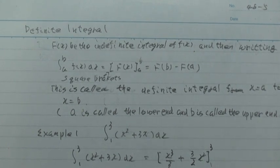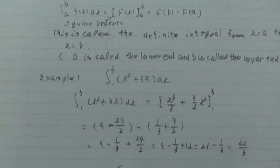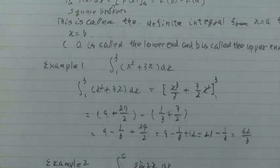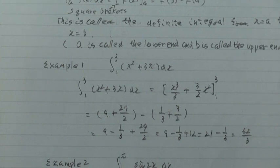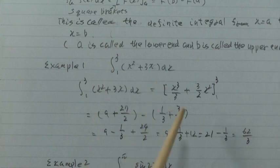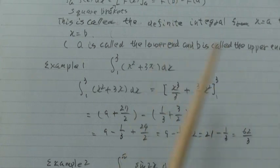Example 1: Integral from 1 to 3 of (x squared plus 3x)dx. This integral from 1 to 3 equals...